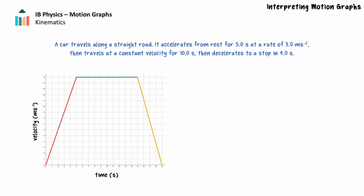Let's begin with the velocity-time graph. Since the car travels on a straight road, we'll consider its direction of travel to be positive. The car begins from rest and accelerates at 3.0 meters per second squared for 5 seconds, so the graph will have a positive gradient of 3.0 meters per second squared during this segment. Since the car begins from rest, the velocity after 5 seconds is 15 meters per second. The car's velocity is 15 meters per second for the next 10.0 seconds, then decreases from 15 meters per second to 0 in the final 4 seconds. To accurately draw the velocity-time graph, we only need to calculate the final velocity after the initial acceleration.